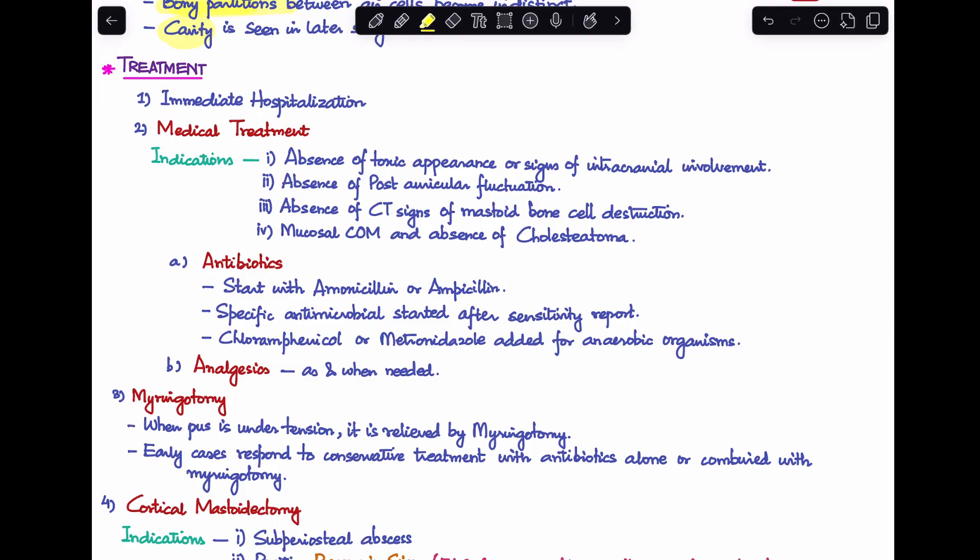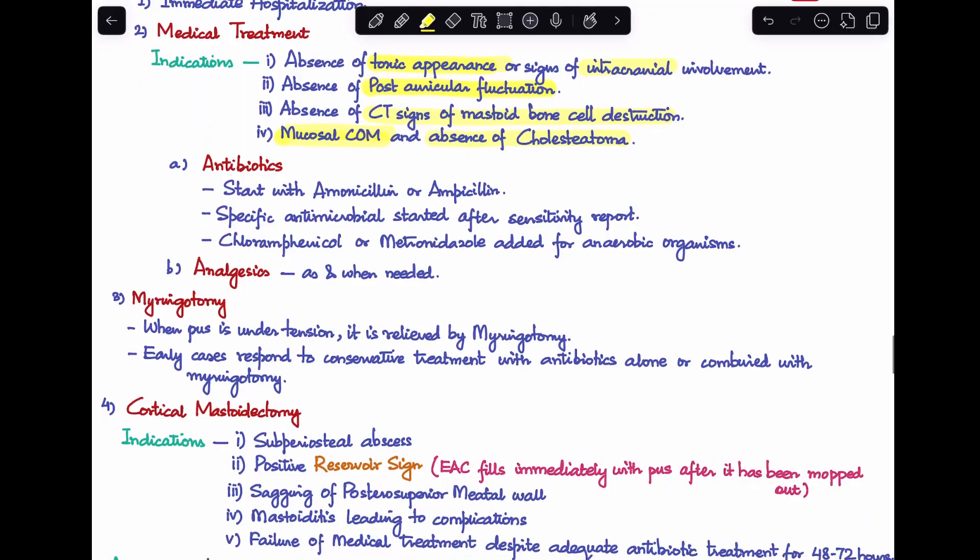Coming to treatment, whenever there's a case of acute mastoiditis, first immediately hospitalize the patient. Second, start with medical treatment. Indications: absence of toxic appearance or signs of intracranial involvement, absence of post-auricular fluctuation, absence of CT signs of mastoid bone cell destruction, mucosal chronic otitis media, and absence of cholesteatoma. We can start with amoxicillin, ampicillin, or third generation cephalosporins. Specific antimicrobial can be done after culture sensitivity. Because there's risk of anaerobic organisms, we can include chloramphenicol or metronidazole. Second, use analgesics as needed.